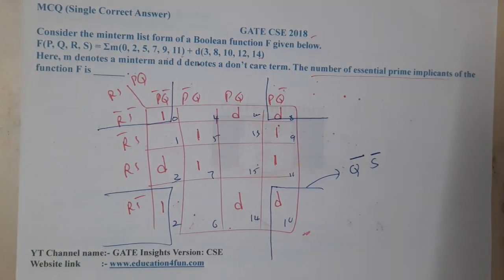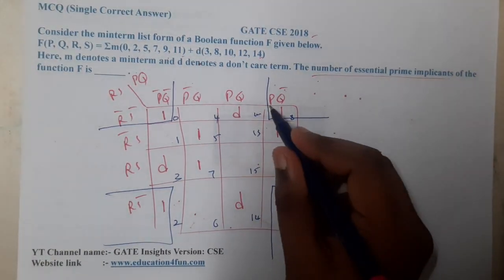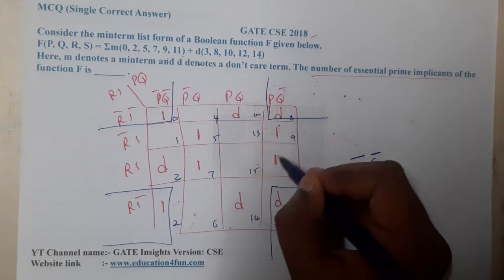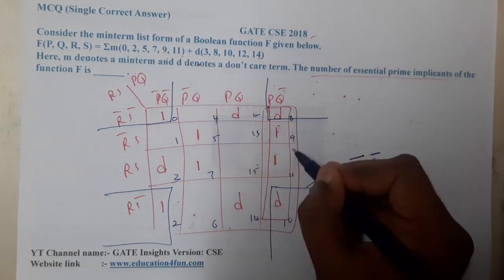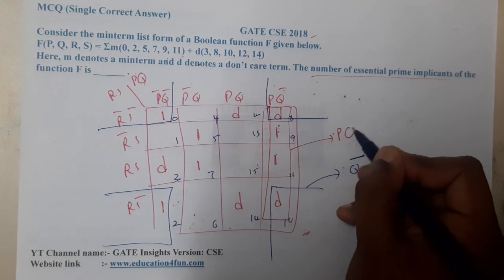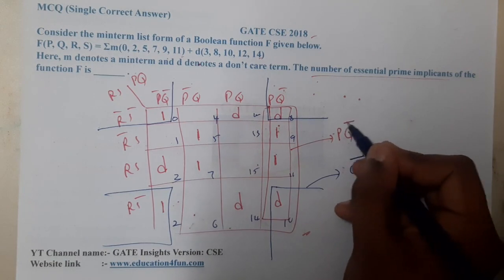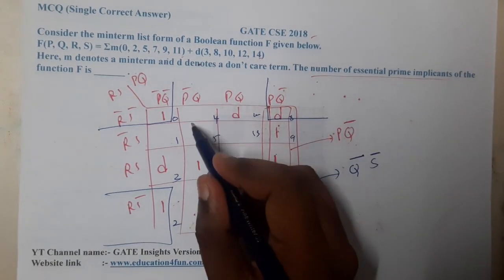Moving on, you can take these four cells as a group to cover the next two minterms. This group is nothing but P̄Q̄ — that is P-bar Q-bar.